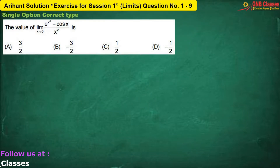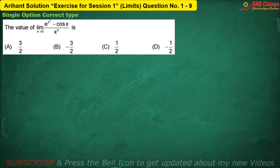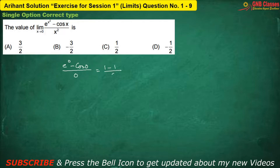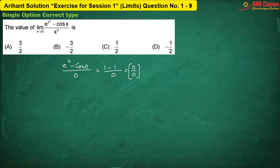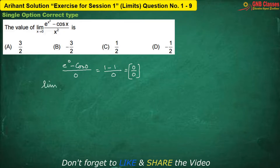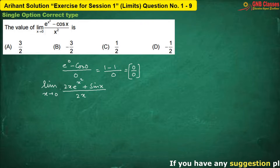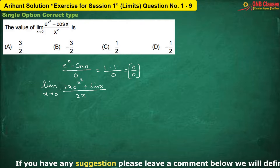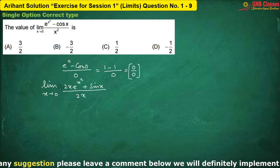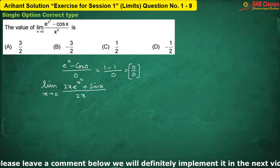In this problem, again if I put x equals to 0, in the numerator we are getting 0, which is again 0 by 0 form. This means we apply L'Hôpital's rule. Even in this case, putting x equals to 0 gives us again 0 by 0 form. So here we can apply L'Hôpital's rule as well as the general method.